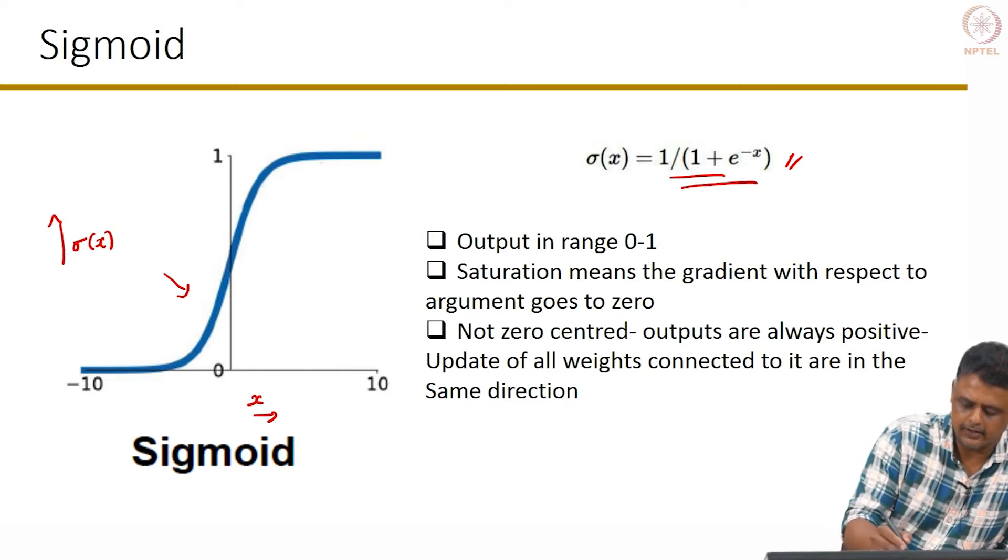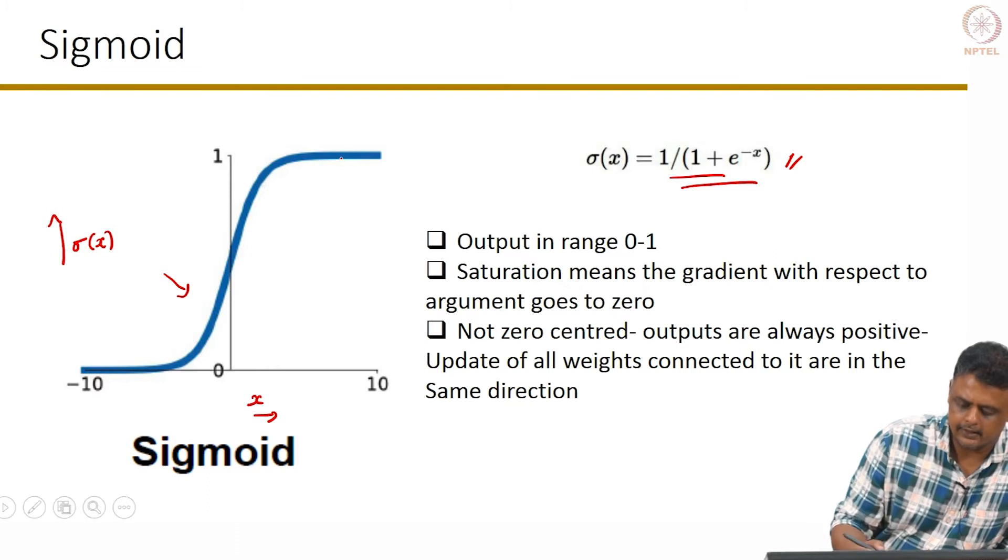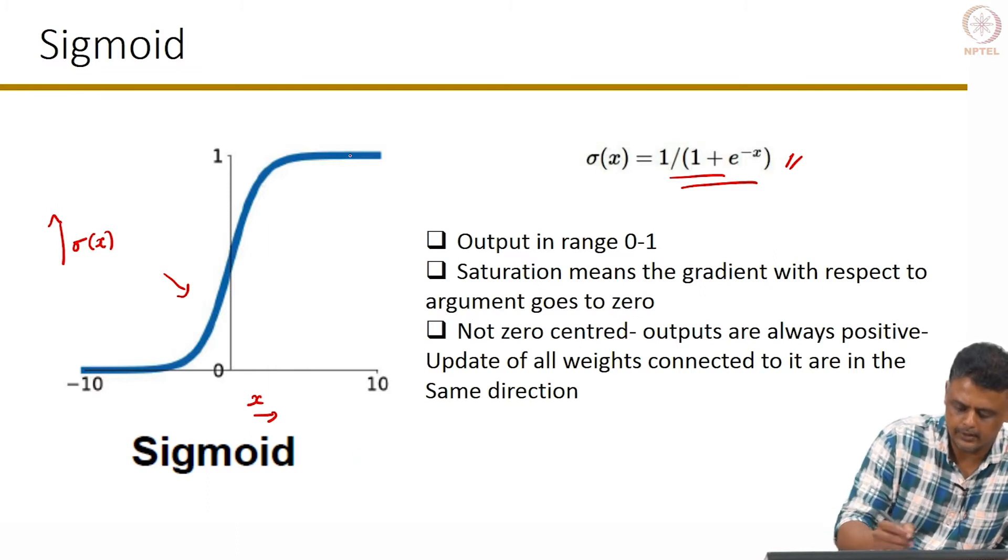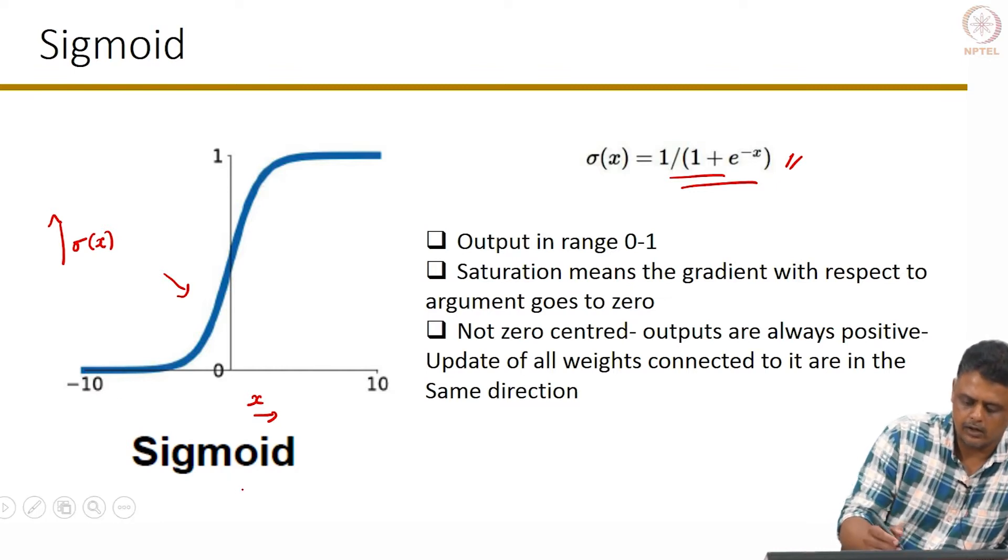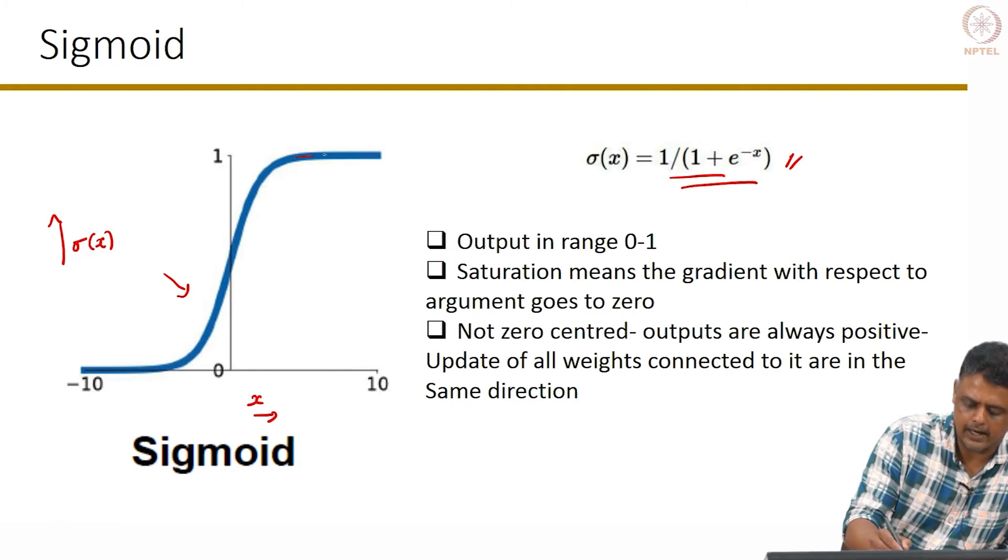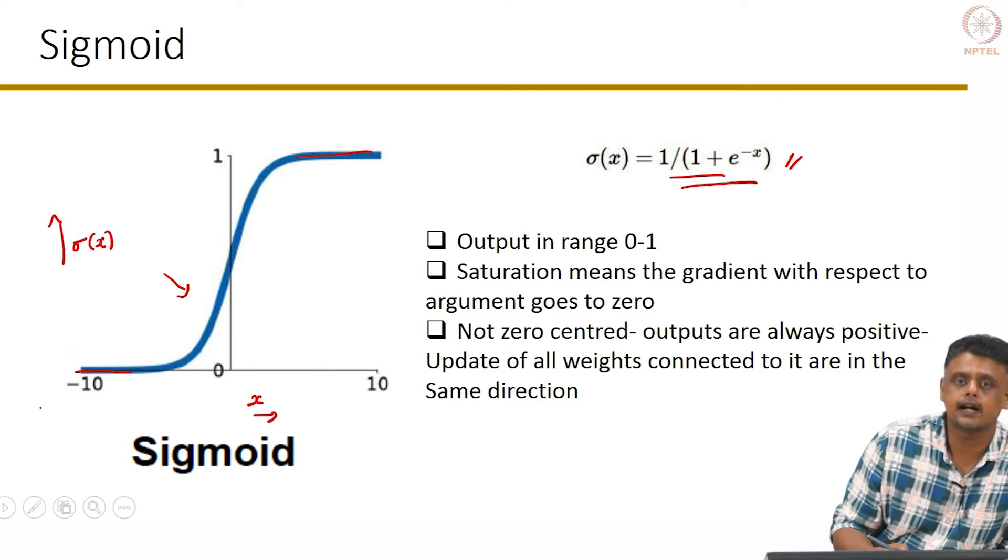We can see that for large values of x, the sigmoid function tends to 1. Again, for large positive values of x, and for large negative values of x, it turns to 0. The thing to note is that it becomes flat for large positive values of x as well as for large negative values of x.